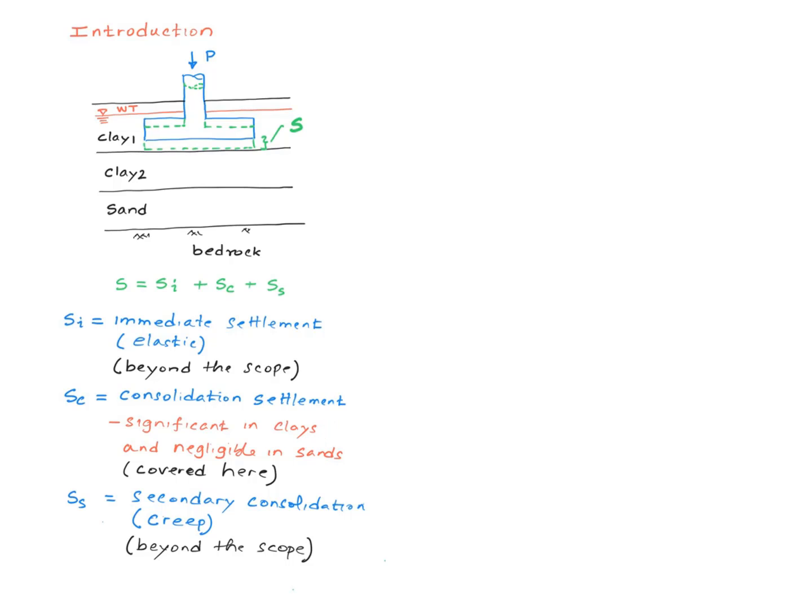The final component is the secondary consolidation, or the creep consolidation settlement. This again is a time dependent settlement. It doesn't happen right away. It happens little by little. It usually takes a lot longer to come to an end than the consolidation settlement, and it happens both in sands and clays but is a lot more significant in clays. Again, this is beyond the scope of this course, and if you are interested, I'll refer you to the book which has a fairly good treatment of this.